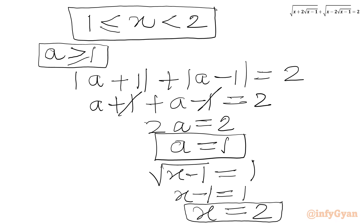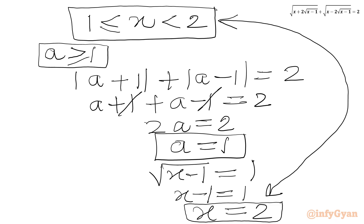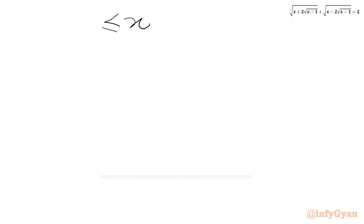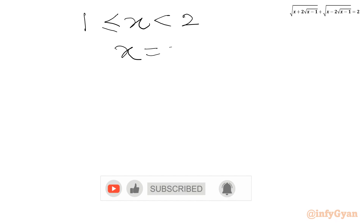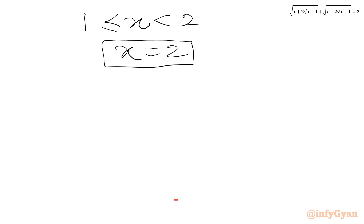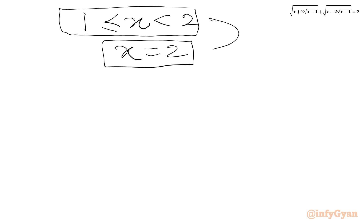So in total we have two results: from Case 2, x lies in [1, 2), and from Case 3, x = 2. Taking the union, our final answer is x ∈ [1, 2].